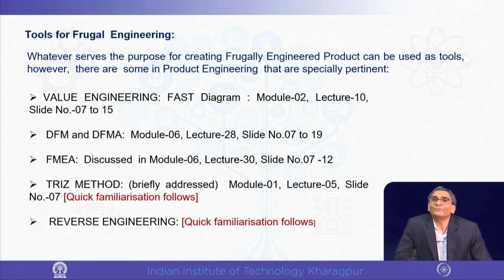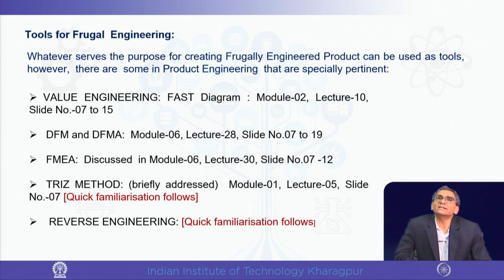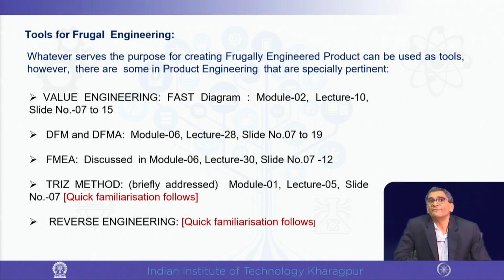Specific tools useful for frugal engineering include: value engineering (discussed in module 2, lecture 10, slides 7–15); design for manufacturing and assembly — DFMA (module 6, lecture 27, slides 7–19); and failure mode and effect analysis — FMEA (module 6, lecture 30, slides 7–12). Two additional important tools — TRIZ and reverse engineering — will be briefly introduced now.